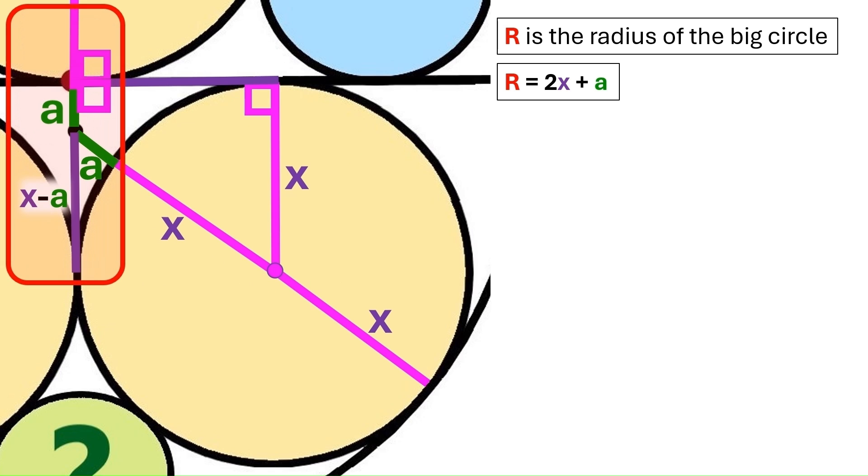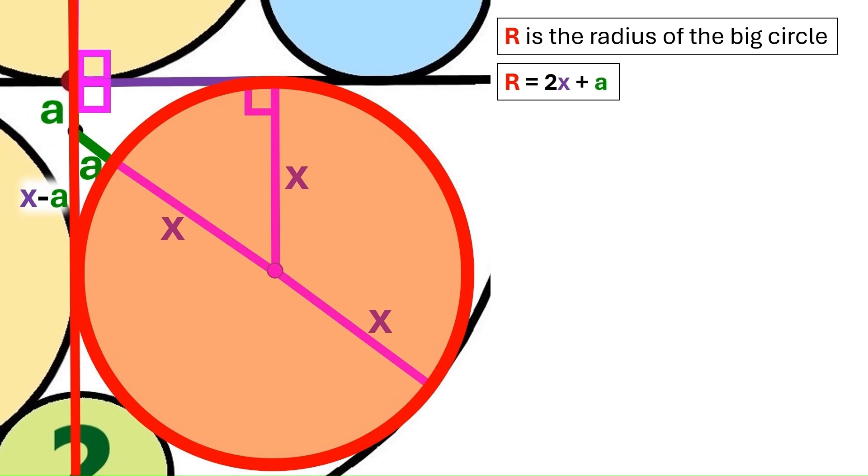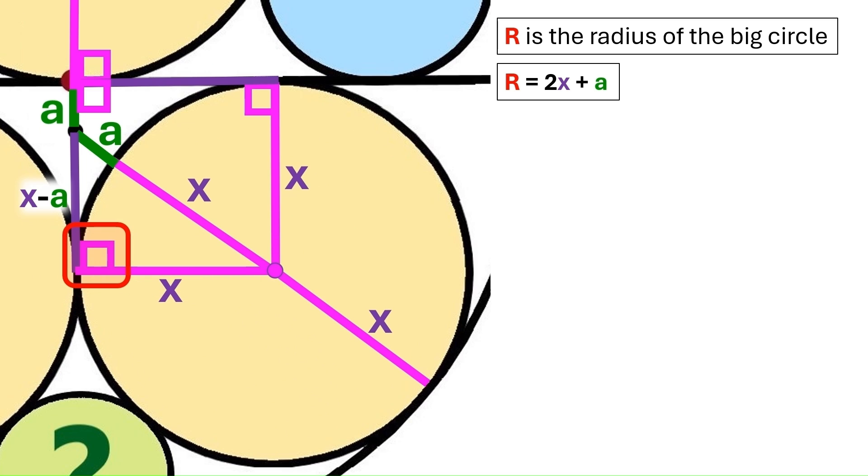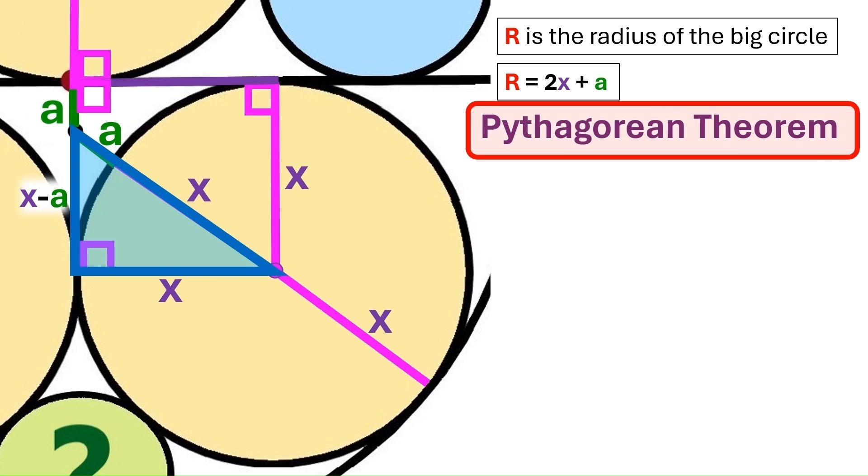Now this entire line is a tangent to this circle, so we can draw another radius x here. And this angle here will be our right angle. Now we've got a very nice right triangle, and now we can apply the Pythagorean theorem, which states that the sum of the squares of the shorter sides of our right triangle equals the square of its longer side.